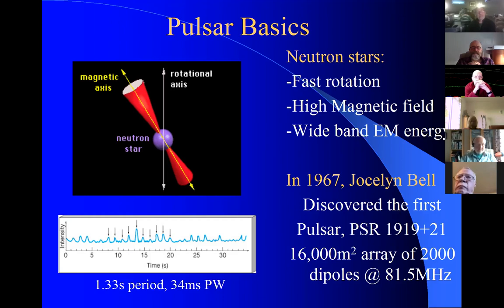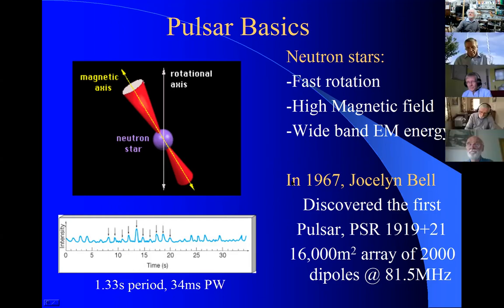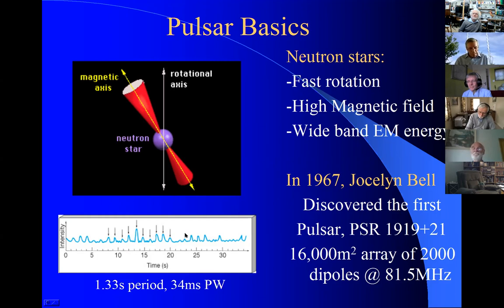As they rotate, they accelerate electrons and protons out of the magnetic poles — both magnetic poles — to send out a wide band electromagnetic energy. If one of those beams happens to pass through the solar system, then we can detect them as pulsars. They were first discovered in 1967 by Jocelyn Bell, who was operating a 16,000 square meter array of 2,000 dipoles at 80 megahertz. She was looking for quasars and she found these what she called 'little green men'. It was in fact the very first pulsar and it has a period of one third of a second and a pulse width of 34 milliseconds.